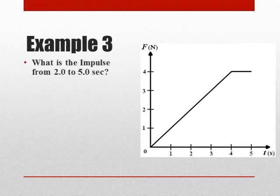The next example, in order to find the impulse here, we actually have to take the area under the curve. Ordinarily, we take the net force and multiply it by time to find the impulse, but since we don't have a constant force here, we have a changing force, then we need to take the area under here. So we need to divide this into shapes that we can find the area for.